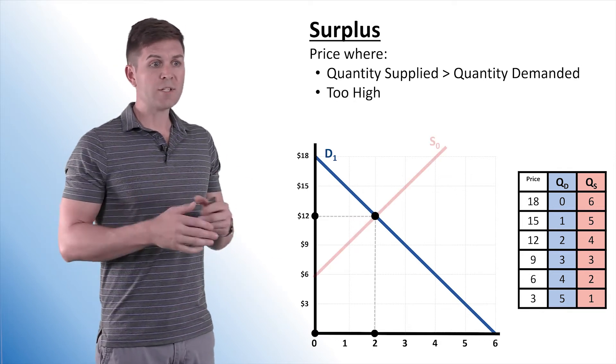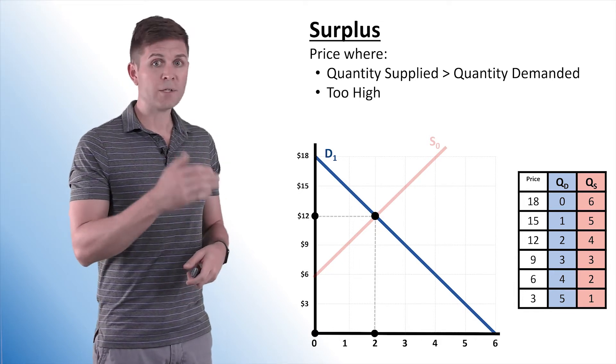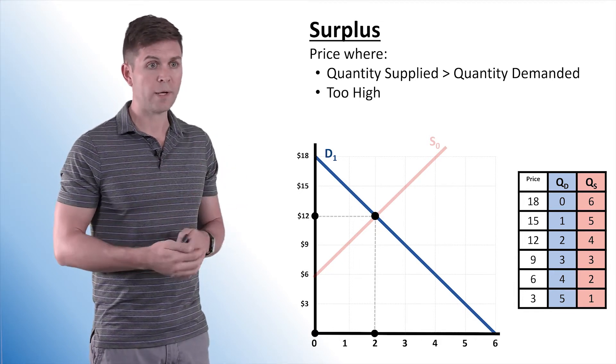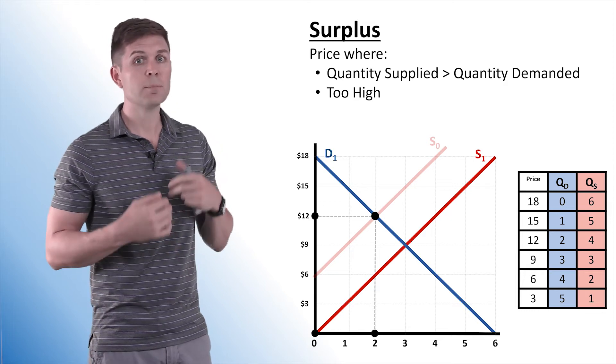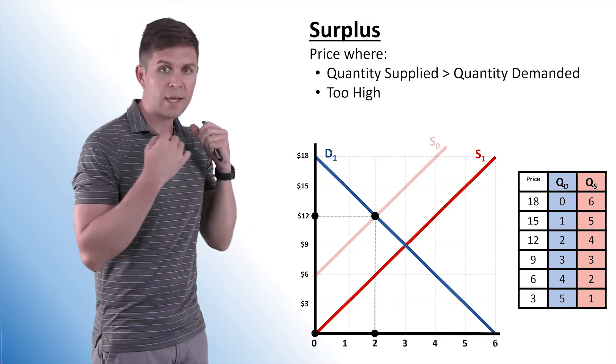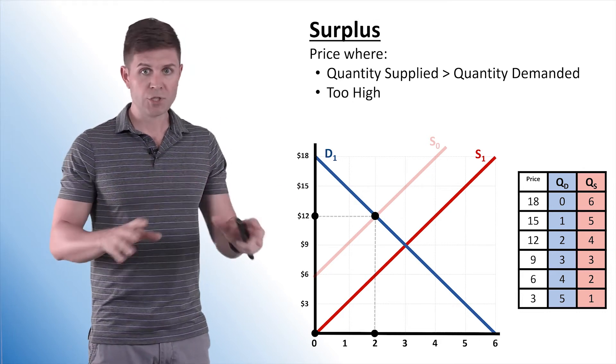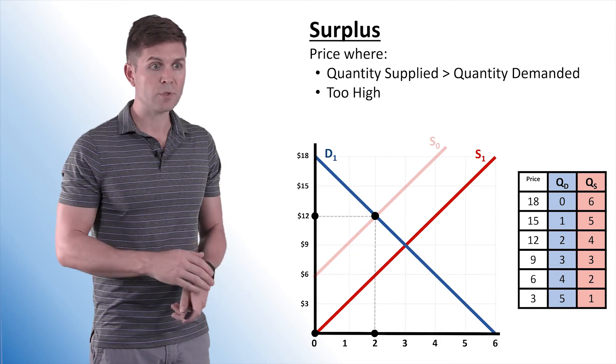So let's imagine that originally this is our setup. We have an equilibrium price of 12, quantity supplied and quantity demanded are both two at this point. And then something changes. Supply shifts to the right. We have, let's say, a drop in input prices and suppliers can produce more at every price level. It doesn't automatically change in the market. It takes a little time to adjust.